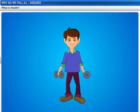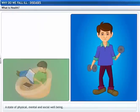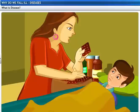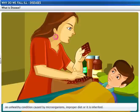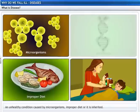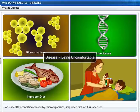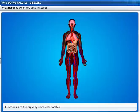Health is defined as a state of physical, mental and social well-being. Health is often affected by diseases. A disease is an unhealthy condition caused by microorganisms, improper diet, or it may be inherited. Disease literally means being uncomfortable.